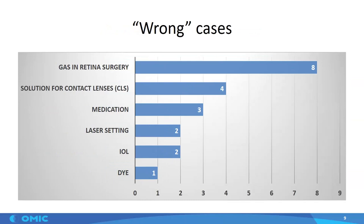Let's look at the wrong cases. Many of you may be surprised at the first one: eight claims involving the gas used in retina surgery. In these claims, the nurse made an error diluting the gas, and the physician was not involved in verifying the gas dilution or the gas type. Solution for contact lenses was the second most frequent, and that can cause significant harm. Wrong medication was the third most frequent, and one case involved a technician inputting a medication order into the computerized physician order system where two medications were very close in name and right next to each other.